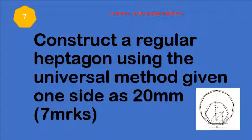So the question reads, construct a regular heptagon using the universal method, given one side as 20 mm. The answer will look like this. And notice that this universal method is an approximation method.